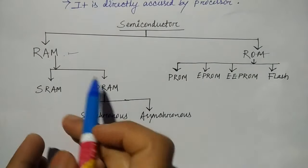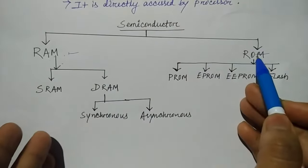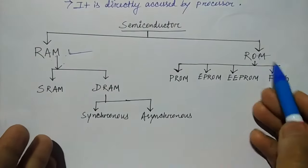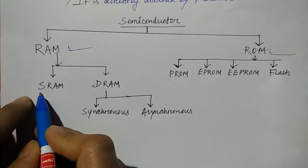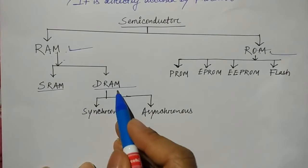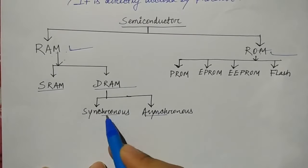RAM and ROM. RAM is again divided into two parts: Static RAM and Dynamic RAM. Dynamic RAM is asynchronous and synchronous.